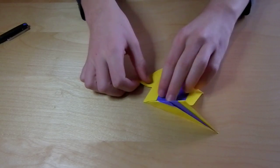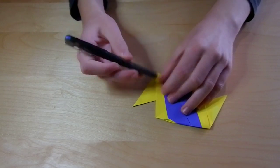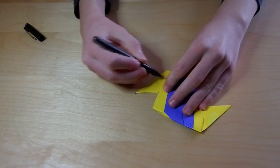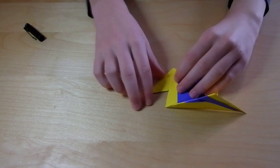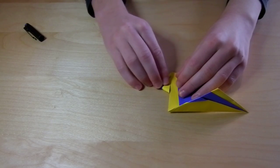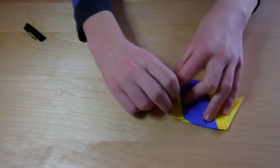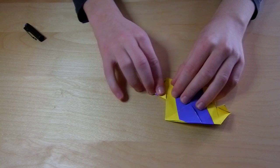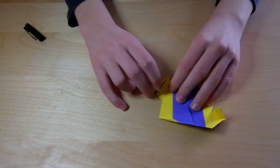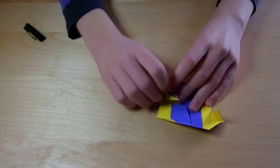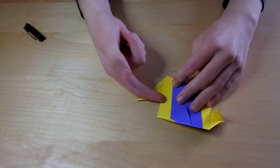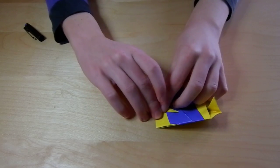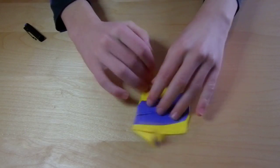So now we're going to fold this edge here into this edge. Do the same thing in the opposite direction. And then fold along this crease.